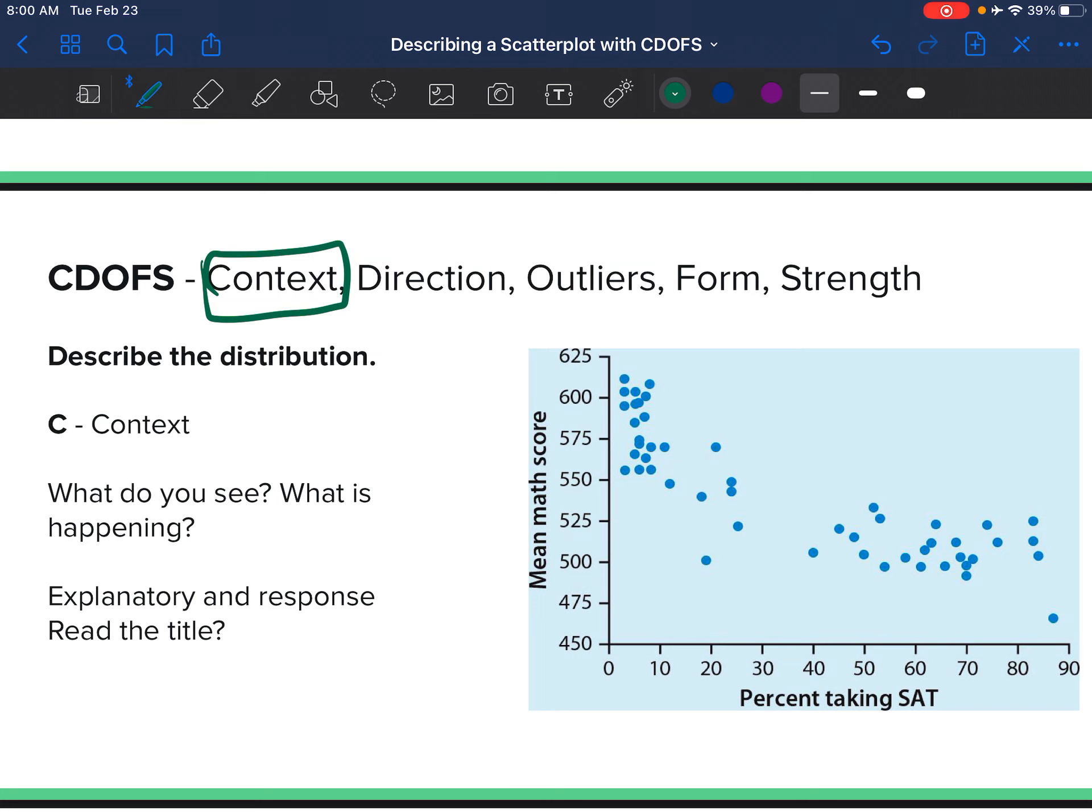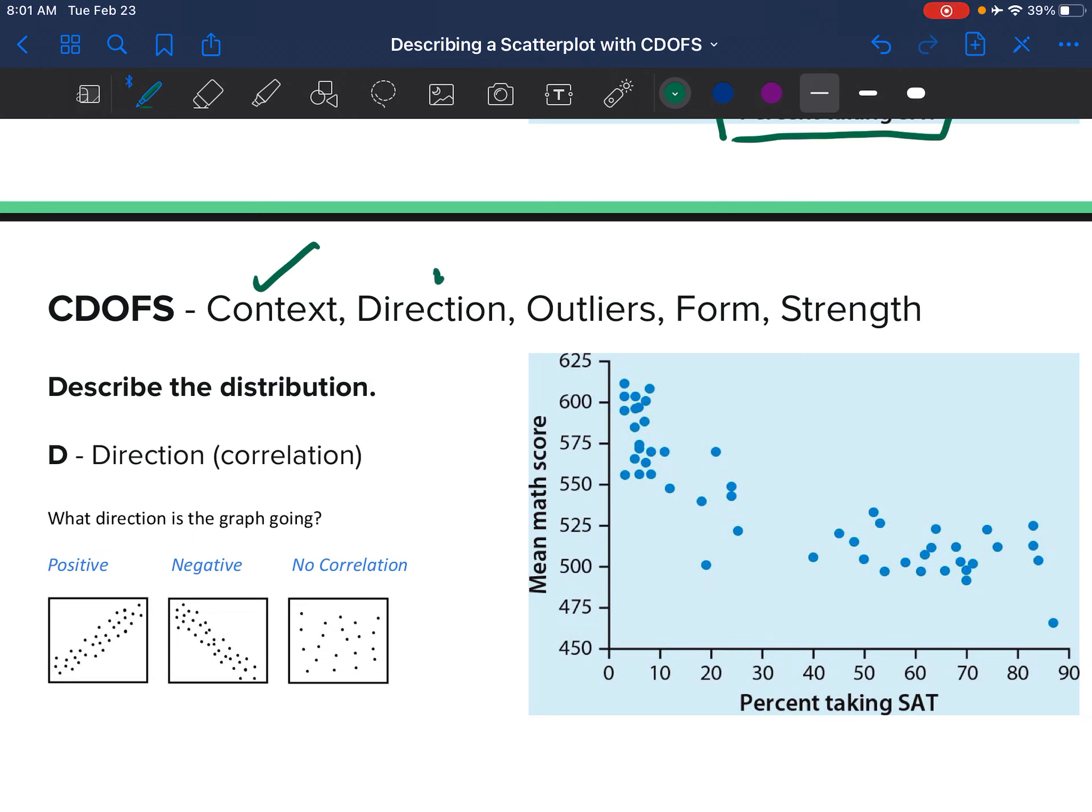The first one in CDOFS is context—what is this about? What is the distribution? Context is really just reading the title and telling me what's happening. Here we have percent taking the SAT and the mean math score. This graph shows a relationship between math score and percent taking the SAT.